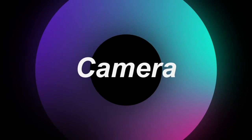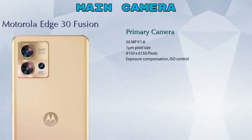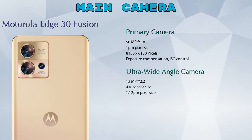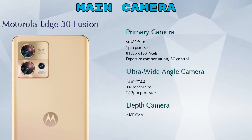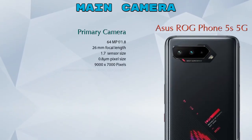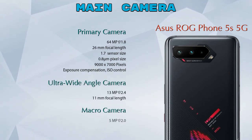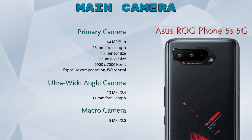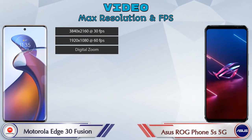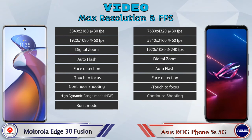Let's talk about our favorite feature — the camera. Looking at the rear camera, the Edge 30 Fusion 5G has three cameras: a primary camera, an ultra-wide angle camera, and a depth camera. The ROG Phone 5s 5G also has three cameras: a primary camera, an ultra-wide angle camera, and a macro camera. For video recording, both phones offer nine different types of features.